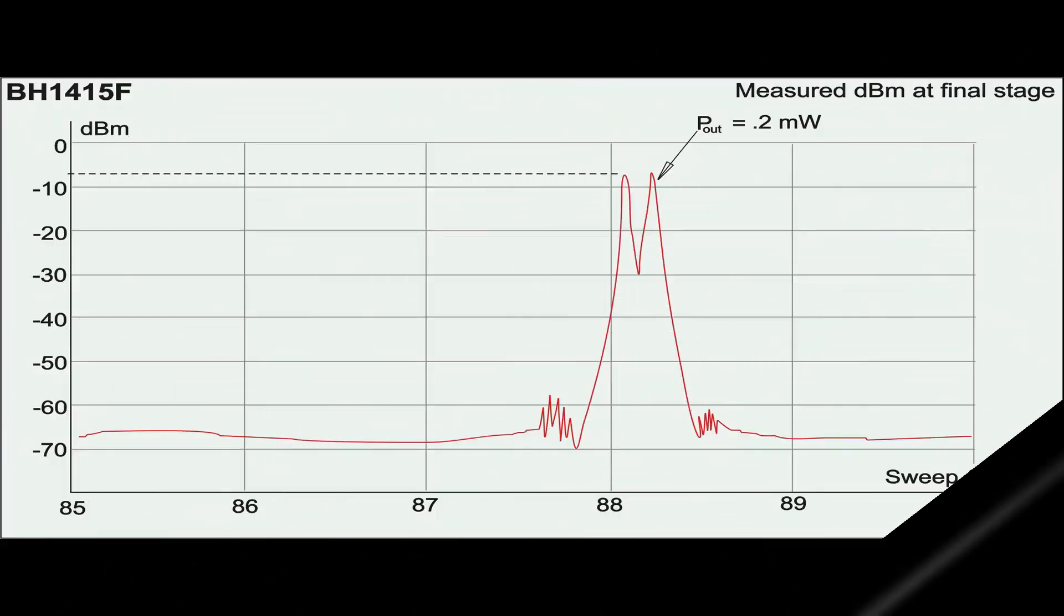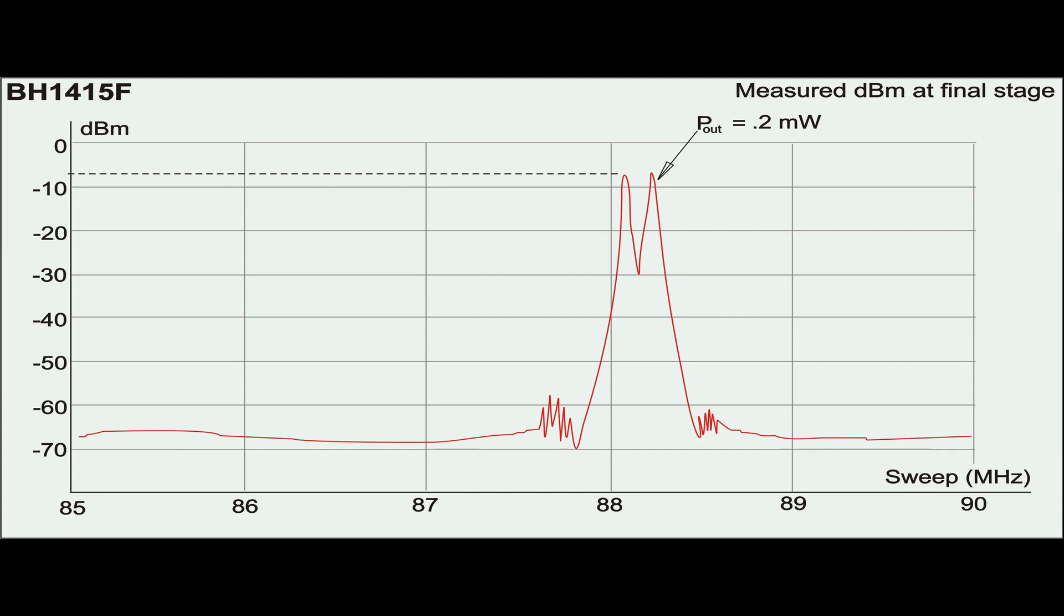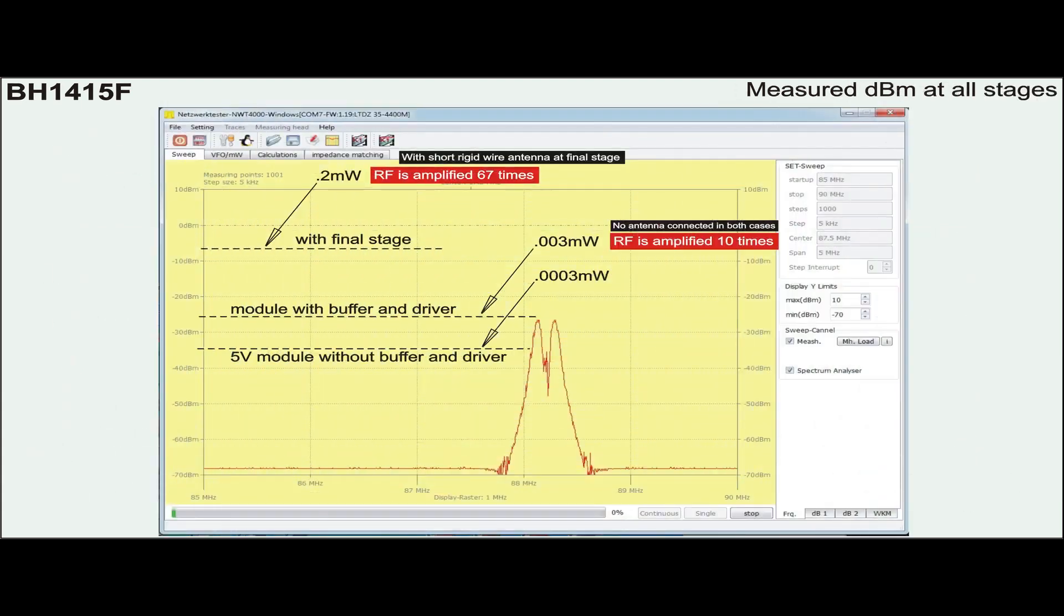Apparently, Q3 with a small rigid antenna can output 0.2 mW on the same scale. Which means the final transistor amplifies the RF from the buffer 67 times larger.